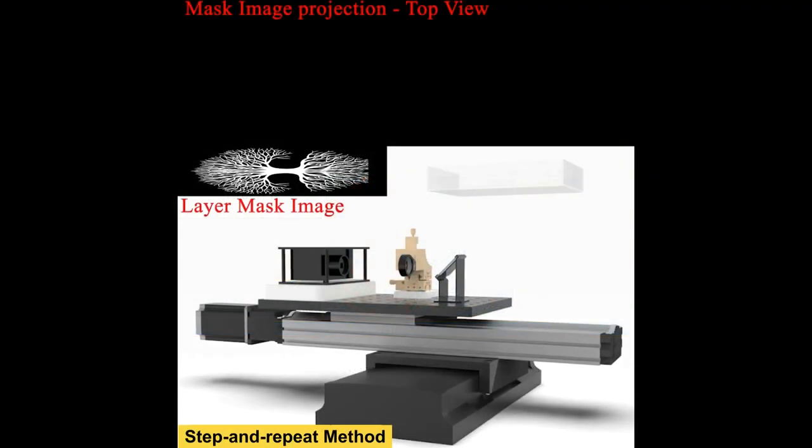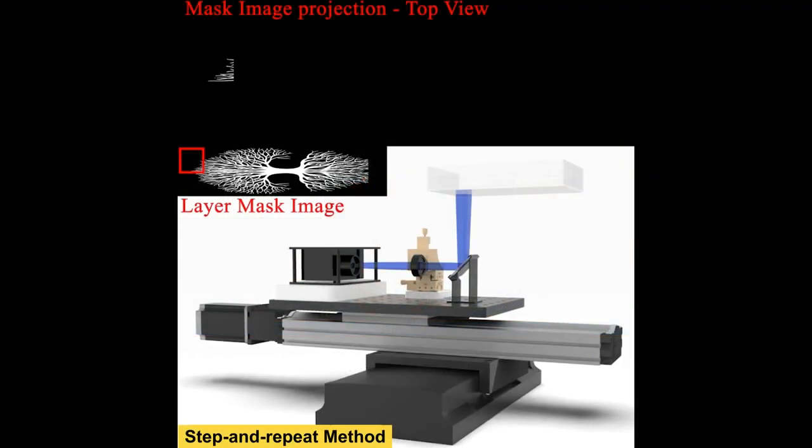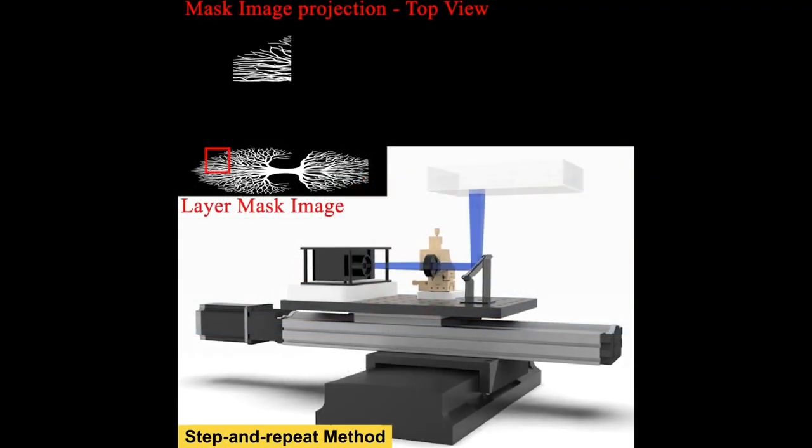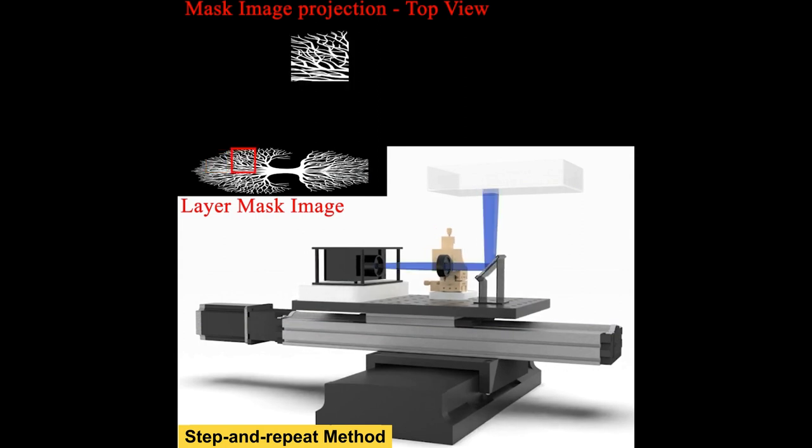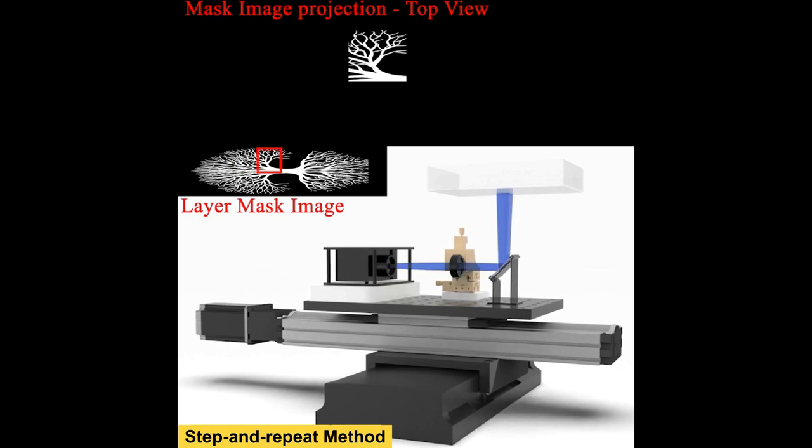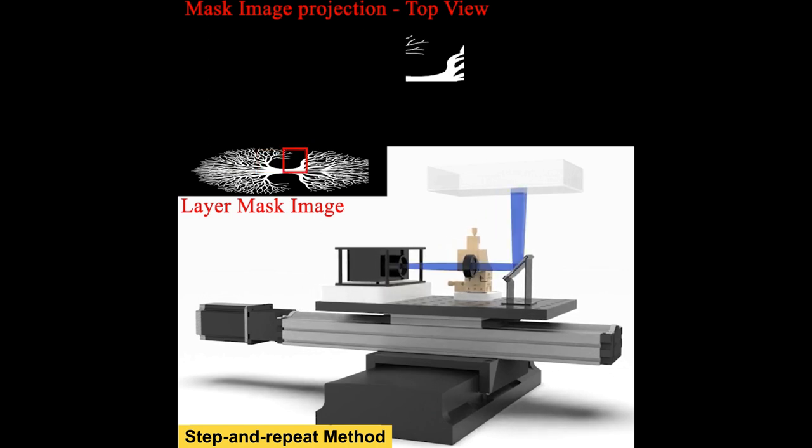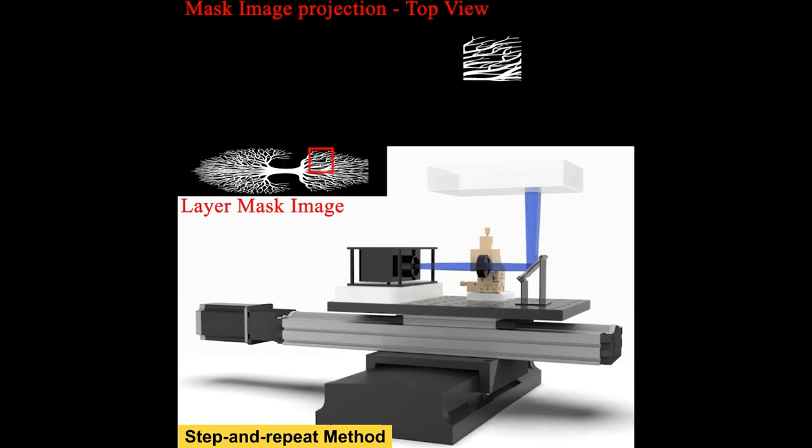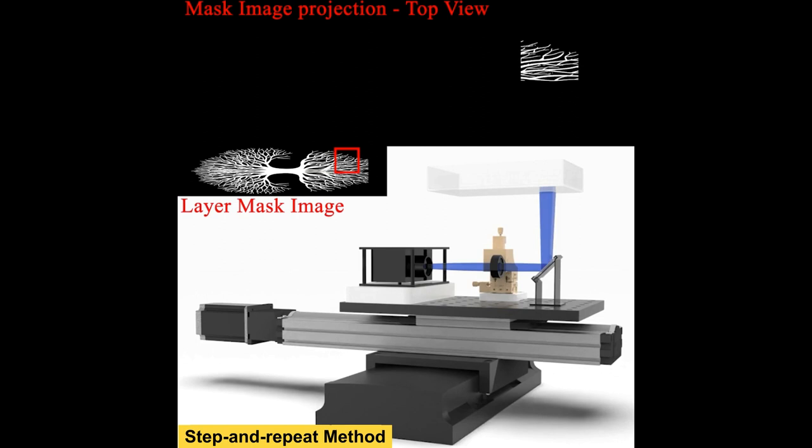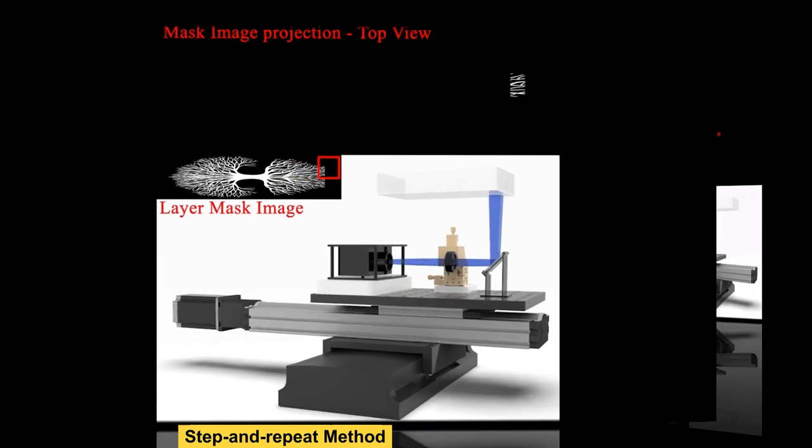A straightforward method to break the print area limit is the well-known step and repeat method. The projection system moves horizontally by motorized stages, stops at a specified position, and then makes a projection. Each sub-area is printed using a consistently higher resolution. The fabrication time will tremendously increase when manufacturing large objects due to the frequent small displacement and on-off switch.